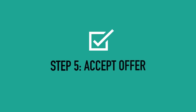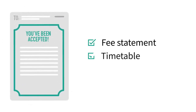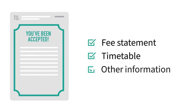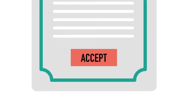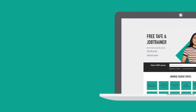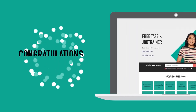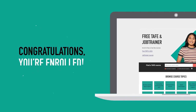Step 5: Accept offer. This will include a fee statement, timetabling information and any other relevant information for your course, and a link to accept your offer. Please click the link to accept your offer. Once you accept your offer, you will be enrolled and you are ready to begin your course. We can't wait to welcome you to VU Polytechnic.